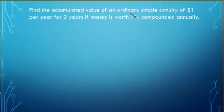Find the accumulated value of an ordinary simple annuity of $1 per year for 3 years if money is worth 7% compounded annually.